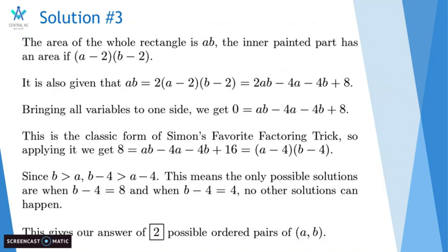On the actual AMC 12B, they give you answer choices, and one of the answer choices here was 1, 2, and 4. So you could have easily overcounted if you didn't see the inequality. So always remember to read the whole question.